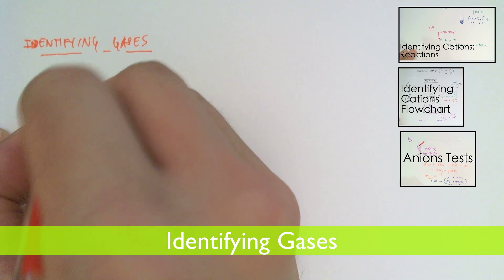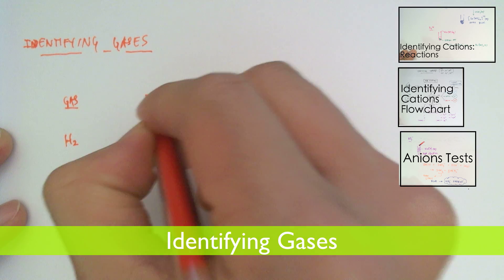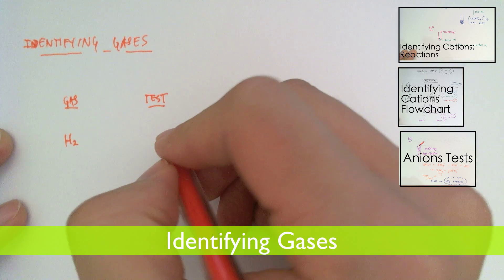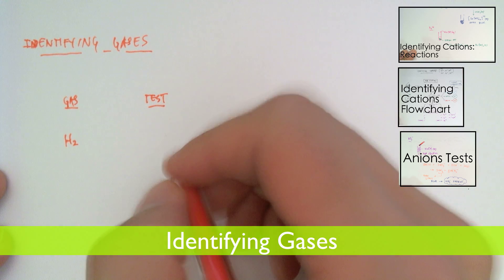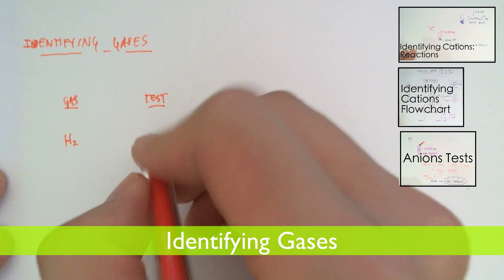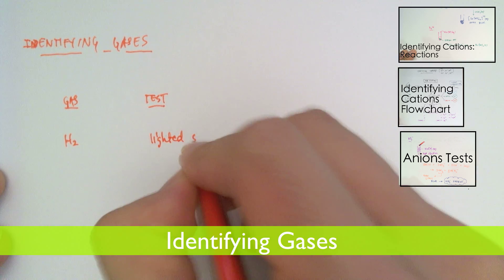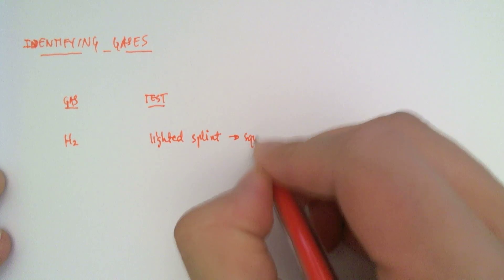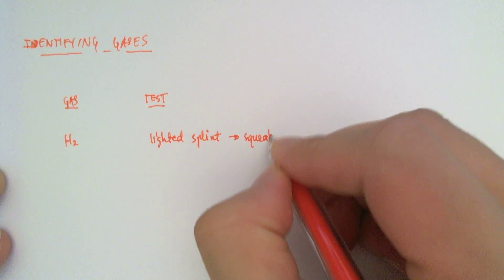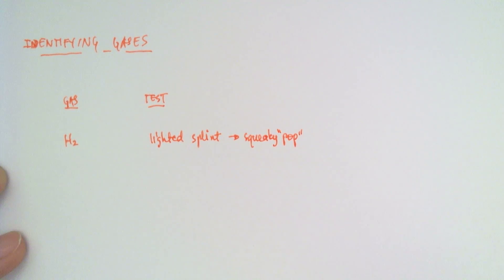Let's first take a look at hydrogen. The test for hydrogen is to use a lighted splint. Hydrogen is highly combustible in oxygen. It reacts violently with oxygen to form water. So we'll take a lighted splint and that will give us a squeaky pop sound if we put it to the top of the test tube.